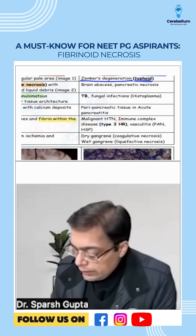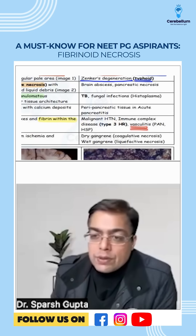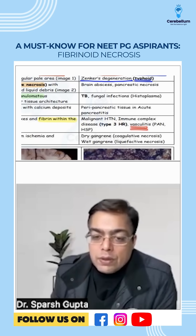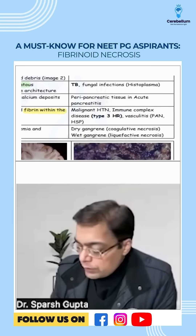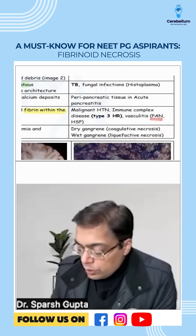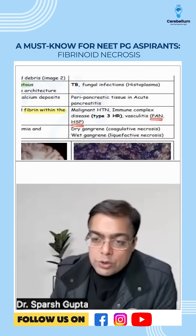Examples to remember for fibrinoid necrosis include vasculitic conditions. These vasculitic conditions can be associated with polyarteritis nodosa.